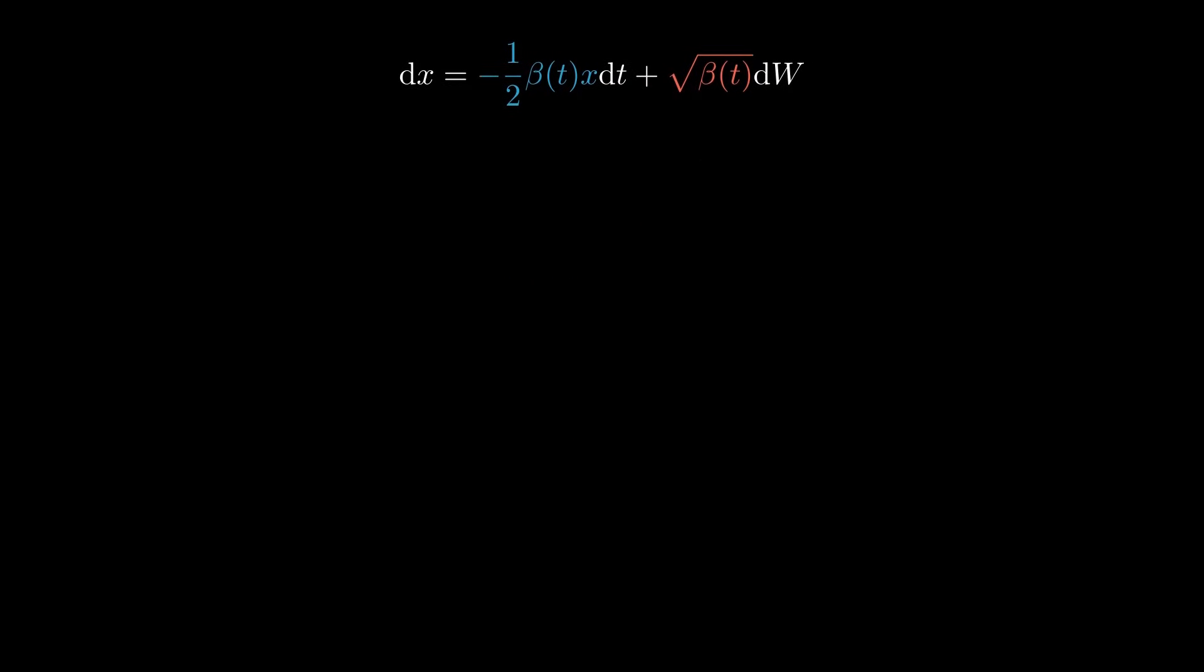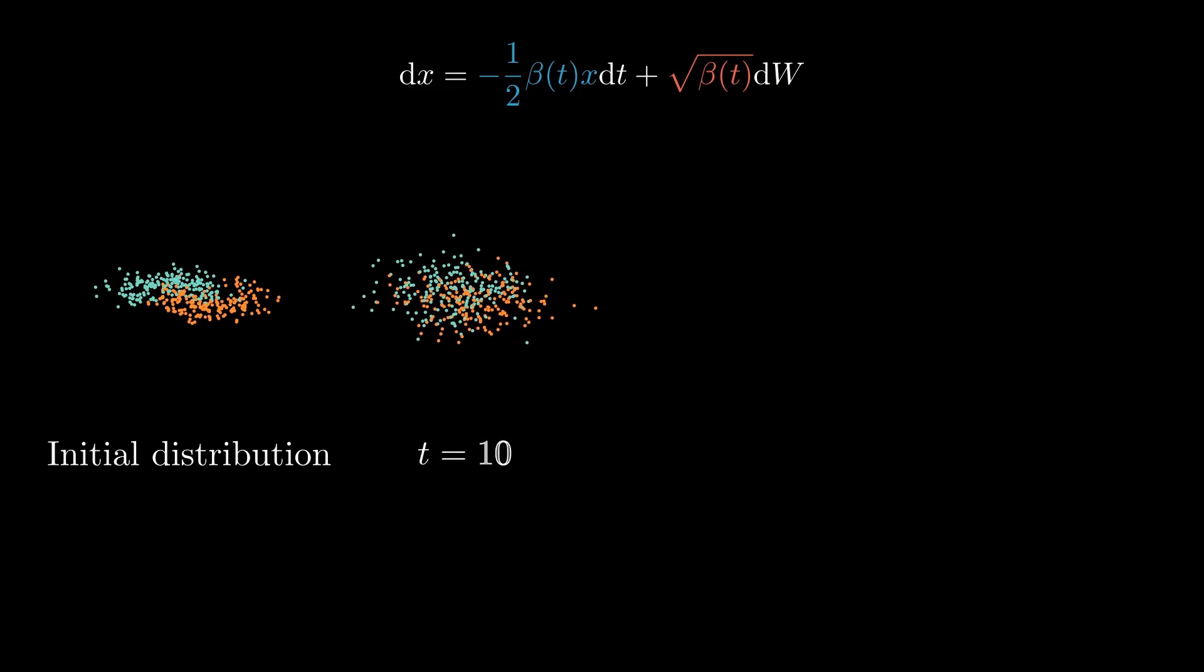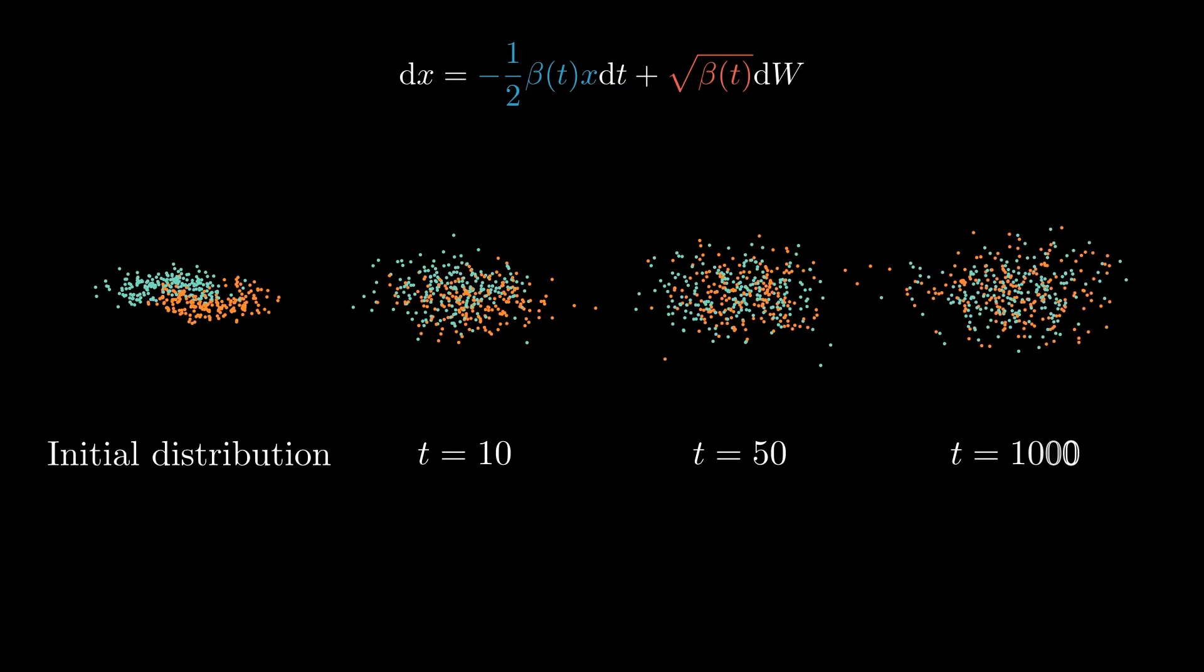So now we know the drift and diffusion coefficients, but what's the actual effect of this equation on a given distribution of particles? If we take the example of this distribution, you can see that as time progresses the points get shuffled around, but they remain roughly centred around zero. This is because the drift term pulls them toward the origin, while the diffusion term spreads them out, preventing them from collapsing to a single point.